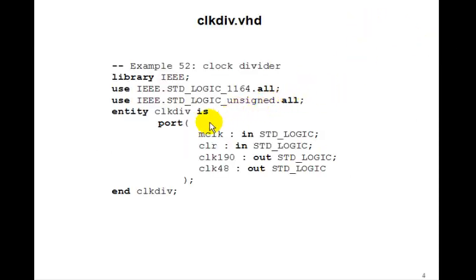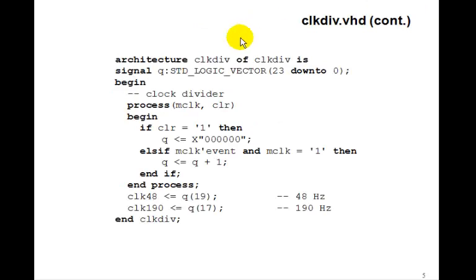So, let's look at clock div first. mclock and clear come in, and clock 190 and clock 48 come out. So, we make Q a signal, 24 bits, 23 down to 0, and then it's our usual counter.